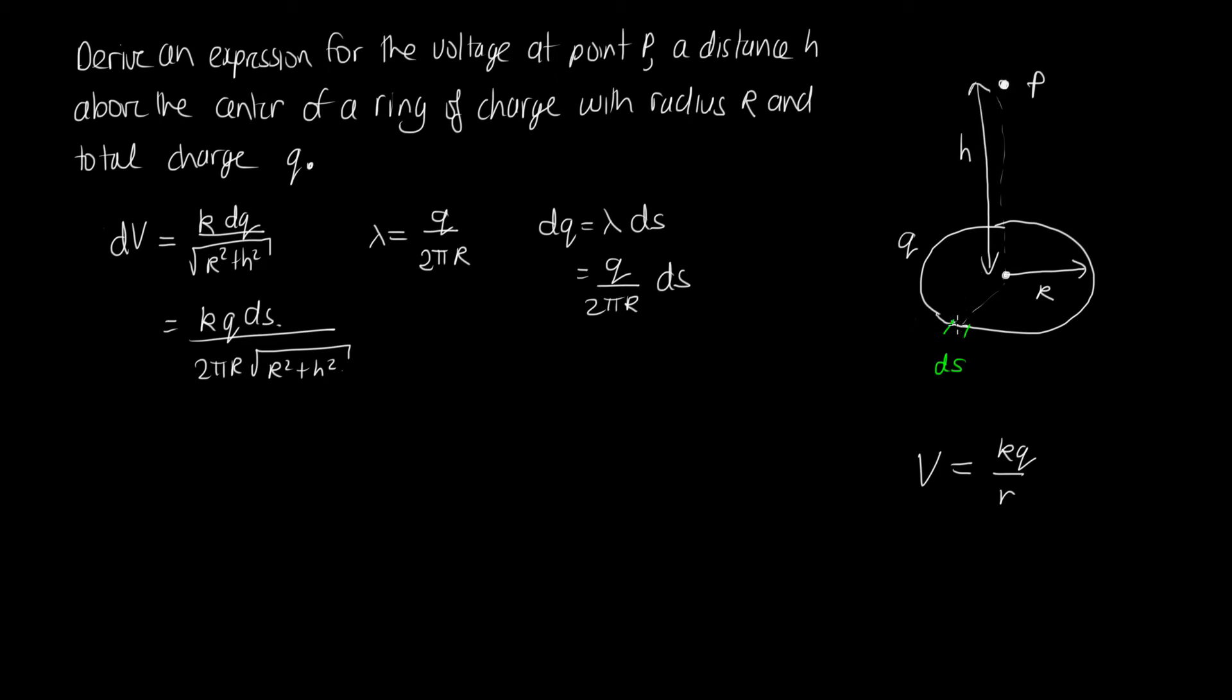So to get the total voltage, we're going to need to sum all these little increments all the way around the circle. So we'll have V is equal to the integral of dV all the way around the circle.